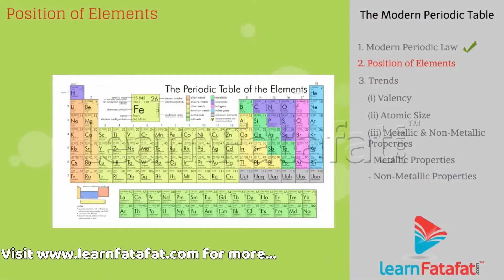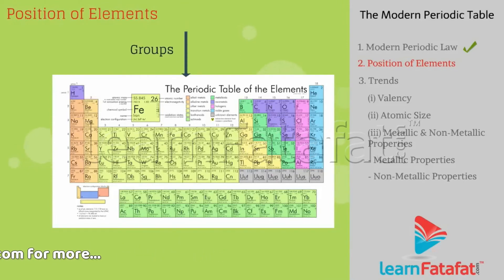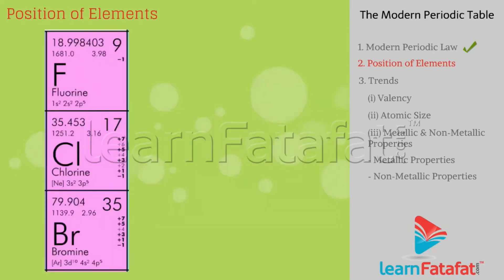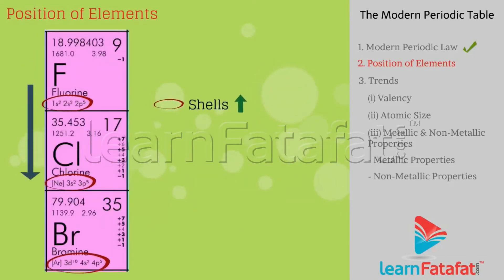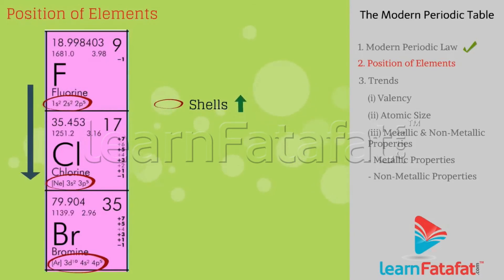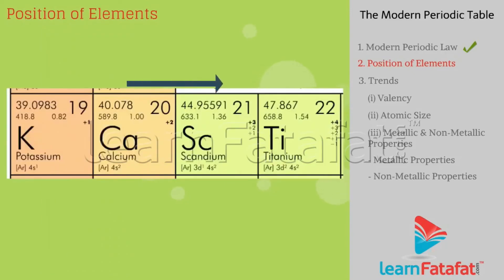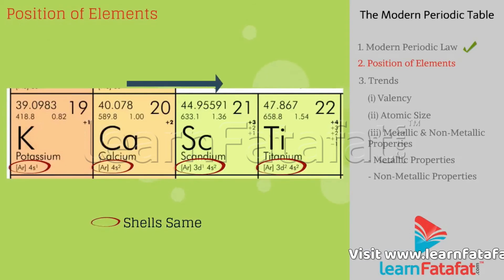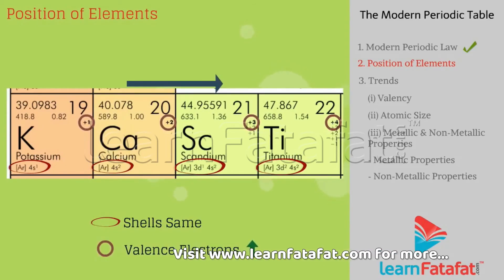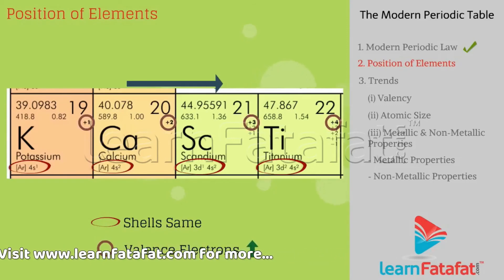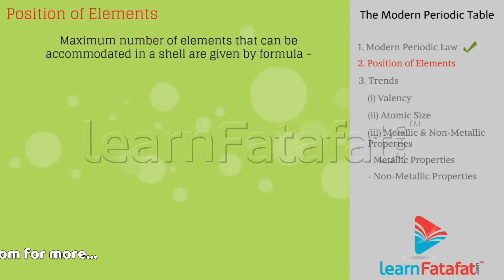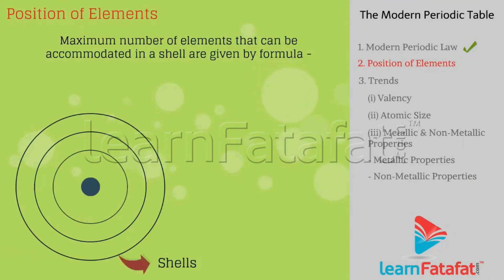Position of elements in the Modern Periodic Table: there are 18 vertical columns known as groups and 7 horizontal rows called periods. Down the group, number of shells increases but number of valence electrons remains same. In a period from left to right, number of shells remains same but number of valence electrons increases by one unit.